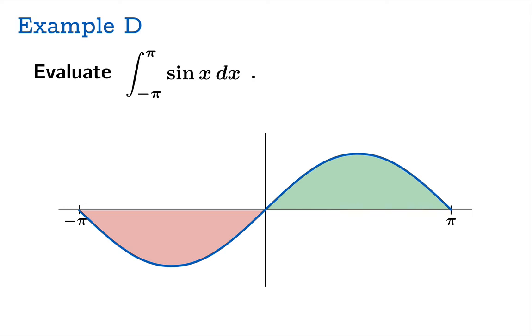But since we're looking for signed area, the one above the axis counts positively, and the one below the axis counts negatively. And that means the total is zero. And so this definite integral is zero because the areas above and below the horizontal axis cancel each other.